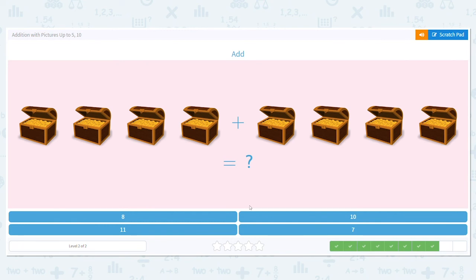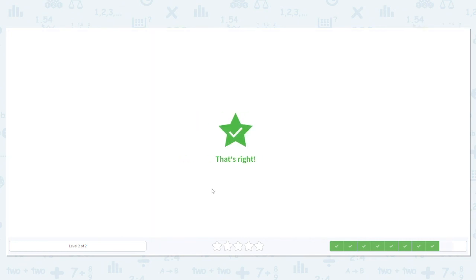Is it 8, 10, 11, or 7? What do you think? 4 plus 4 equals what? Let's find out. 4, 5, 6, 7, 8. 8. So 4 plus 4 is 8.